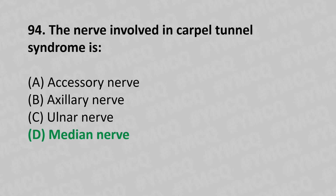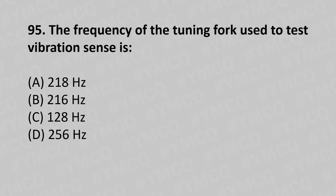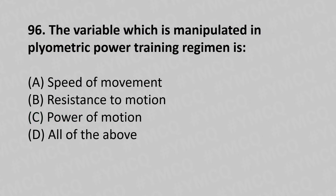Moving to our 95th question. The frequency of tuning fork used to test vibration is: option A 218 hertz, option B 216 hertz, option C 128 hertz, option D 256 hertz. The answer is option C, 128 hertz.